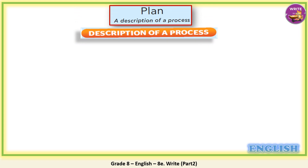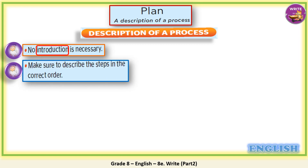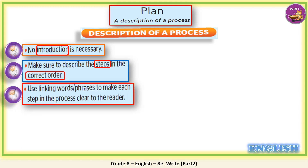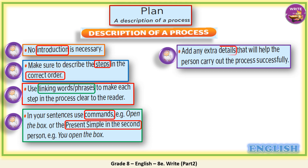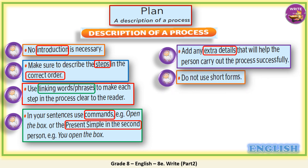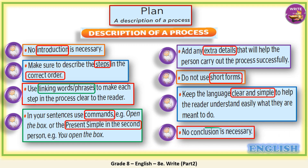The second part of the plan is the description of the process. When we write, no introduction is necessary. Make sure to describe the steps in the correct order. Use linking words and phrases to make each step in the process clear to the reader. In your sentences, use commands, like 'open the box', or you can use the present simple in the second person, like 'you open the box'. Add any extra details that will help the person carry out the process successfully. Don't use short forms. Keep the language clear and simple to help the reader understand easily what they are meant to do. And finally, no conclusion is necessary.